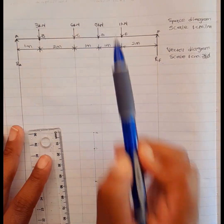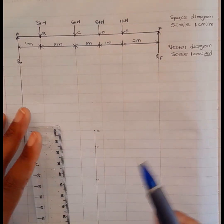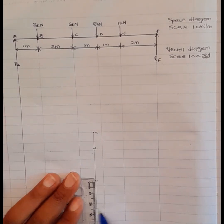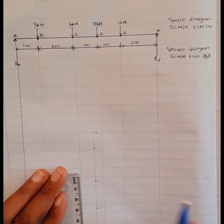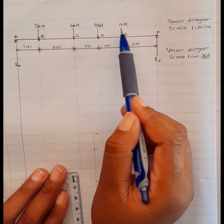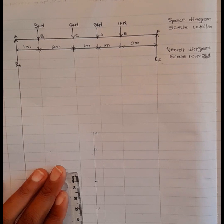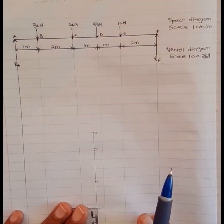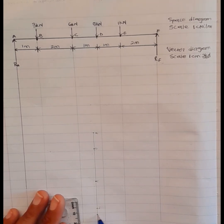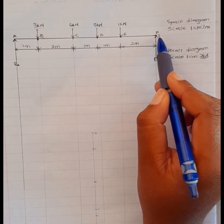From C to D I have a force of 5 kilonewtons. I divide 5 by 2 and get 2.5. I measure 2.5 centimeters down from point C to get point D. From D to E I have 1 kilonewton — 1 divided by 2 gives 0.5 — so I measure 0.5 centimeters down from point D to get point E.